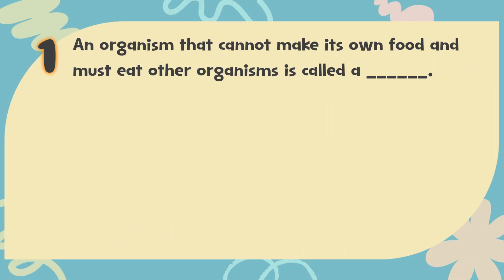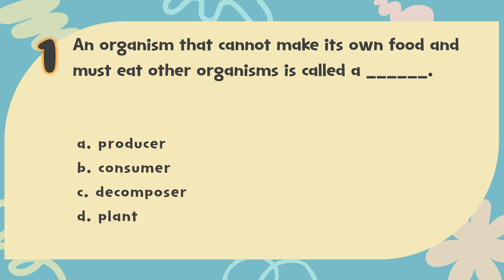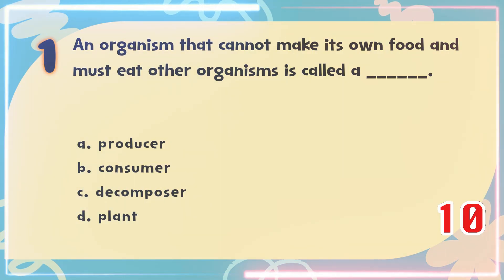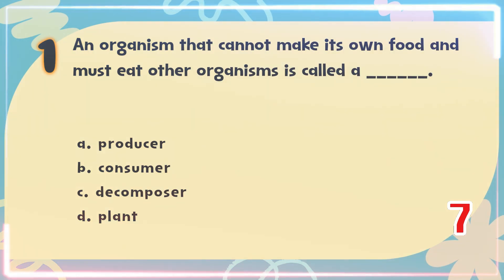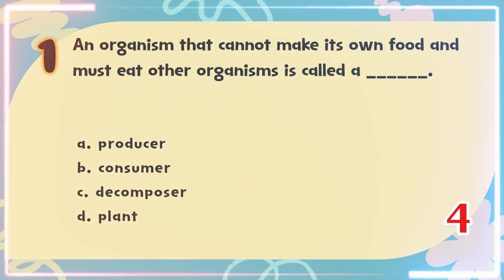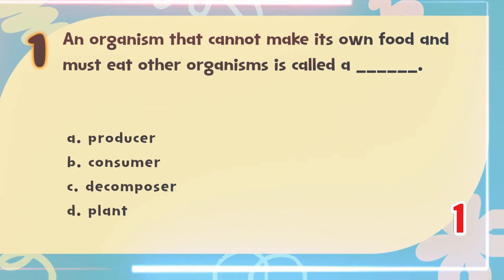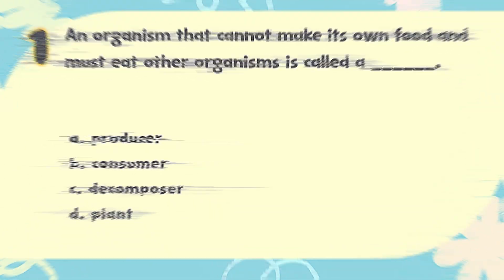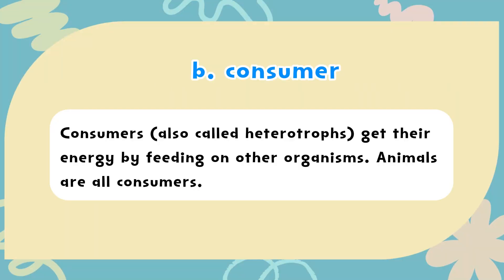Number 1. An organism that cannot make its own food and must eat other organisms is called a blank. The choices are: A. Producer, B. Consumer, C. Decomposer, D. Plant. The correct answer is B. Consumer. Consumers, also called heterotrophs, get their energy by feeding on other organisms. Animals are all consumers.